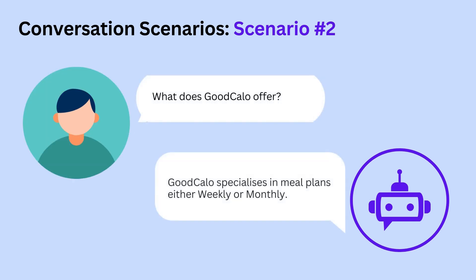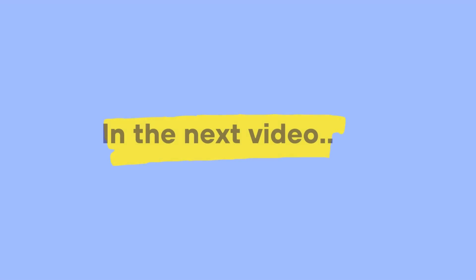The second conversation scenario is a user who directly asks for GoodCalo's services. The chatbot must be flexible enough to respond according to different user inputs, recognizing that there are different ways users may interact with it. We should account for multiple conversation scenarios so our chatbot becomes flexible when encountering different conversation flows. In the next video, we'll take these project requirements and design discussions into consideration while actually building the chatbot through code — so stay tuned, and thank you for watching.